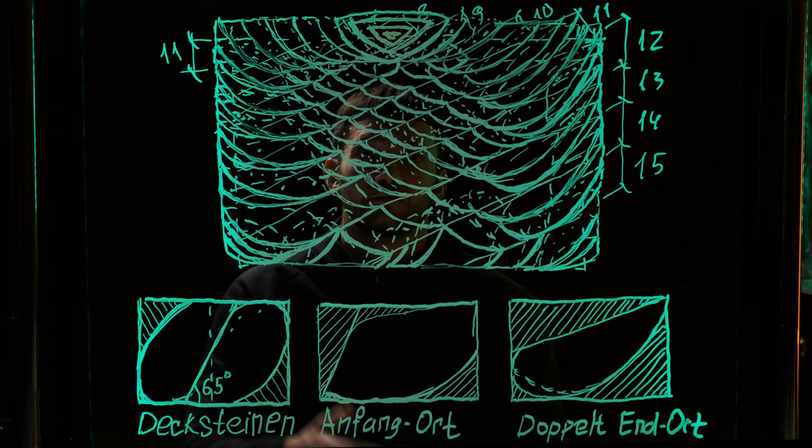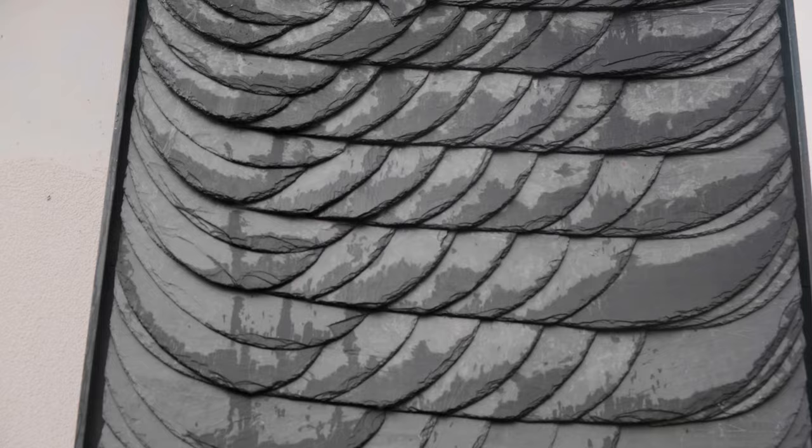This at first glance complex technique can be divided into three simple stages: making blanks, marking the surface, and placing the blanks on the surface. Three simple steps that will allow you to master the old German slating right in your workshop. If you master these three simple steps, you will be able to make such a picture from a rectangular slate.